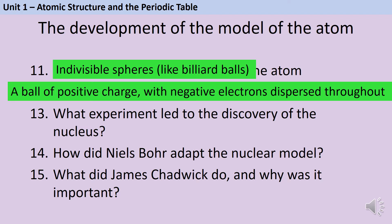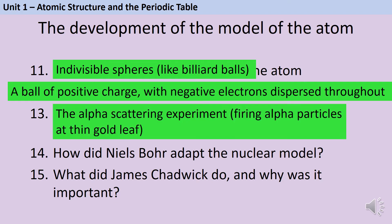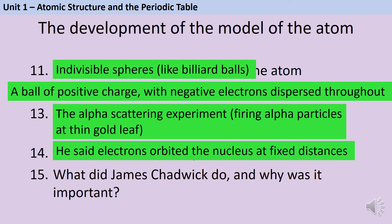The nucleus was discovered by Ernest Rutherford and his students Geiger and Marsden using the alpha scattering experiment, which involved firing alpha particles at gold leaf. Niels Bohr then adapted the nuclear model by saying that electrons orbited the nucleus at fixed distances. In 1932, James Chadwick discovered the neutron, which had important implications for isotopes because it was able to explain the differences seen in mass data.